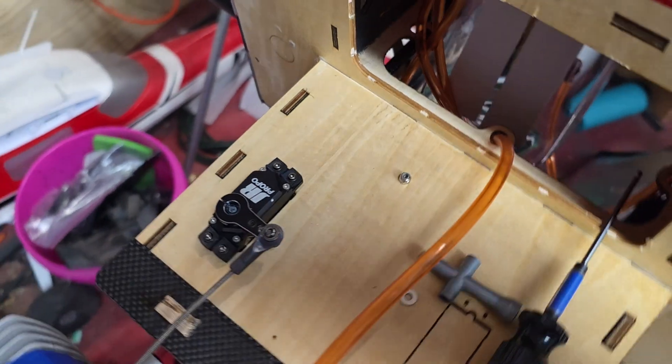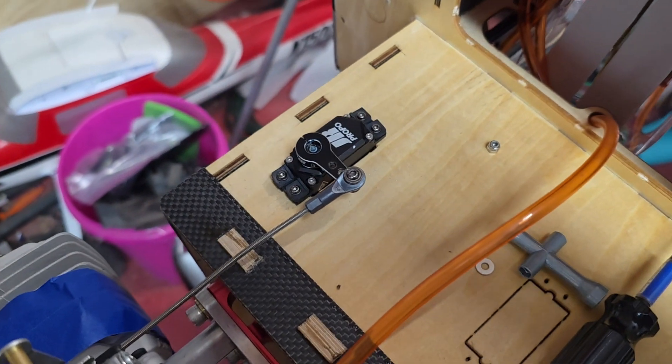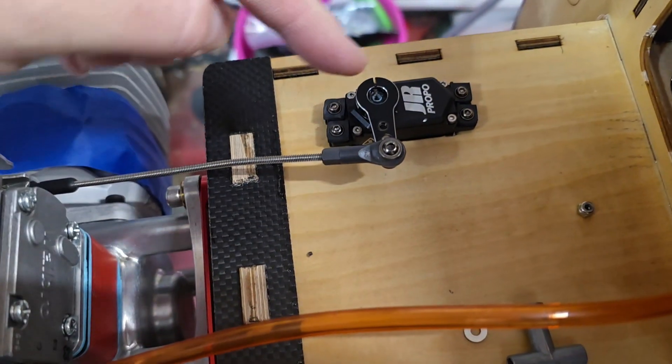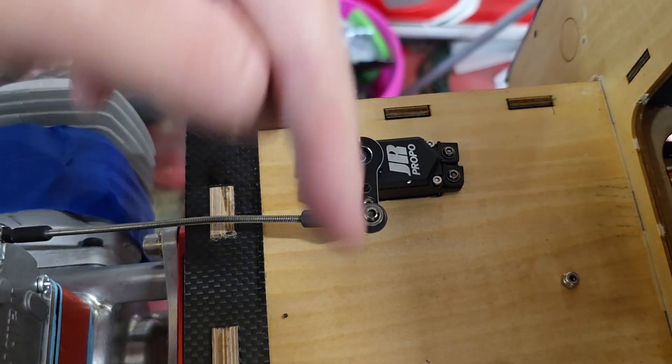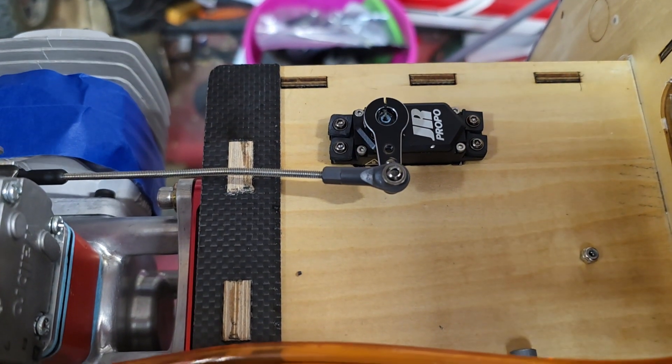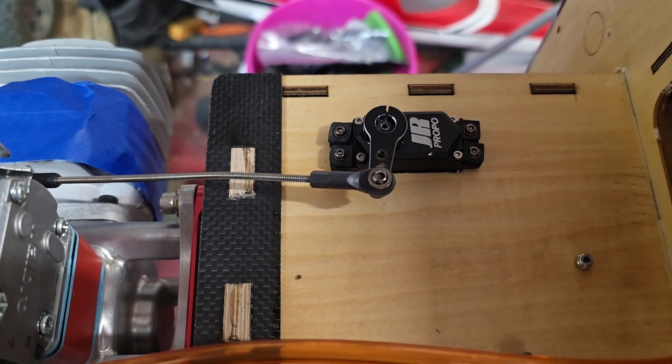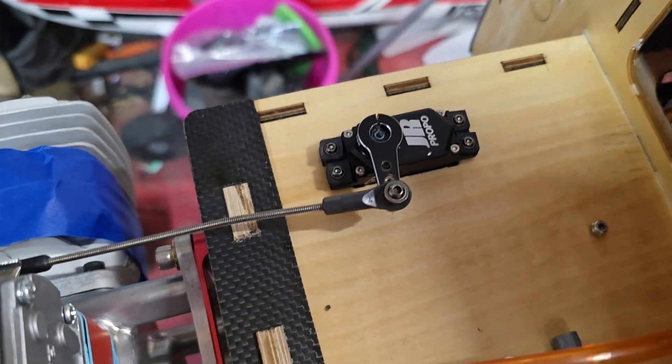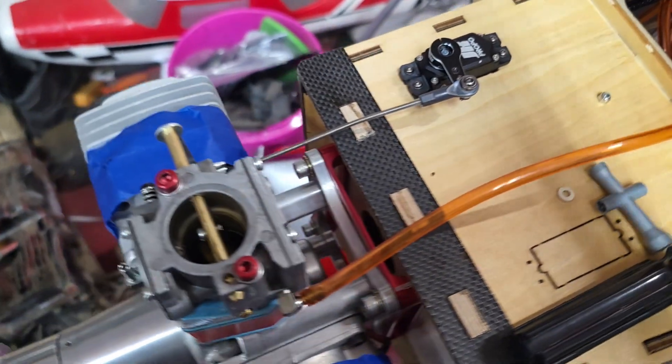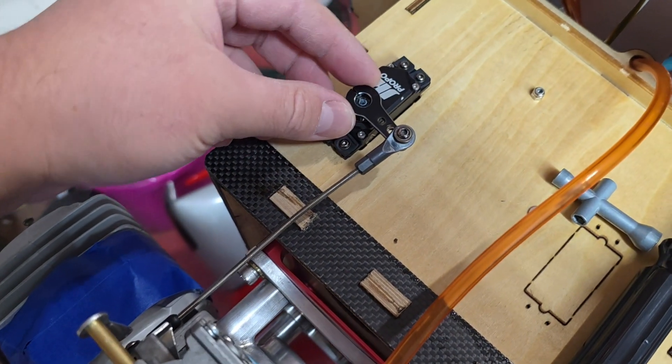A lot of people like to do their throttle linkage setup very similar to how you would do a control surface, where you have the arm on your servo perfectly perpendicular to the case of the servo at center and then try to get an even sweep top to bottom out of the servo. Now today I want to show why that's not always the greatest idea when it comes to your engine.